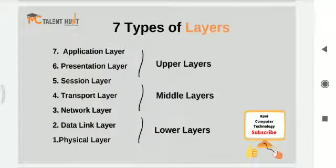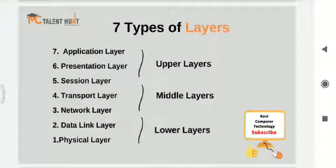Starting from application layer, presentation layer, session layer, transport layer, network layer, data link layer, and physical layer. The application layer is the top layer and the physical layer is the first layer — layers one through seven. Application and presentation layers act as upper layers; session, transport, and network layers act as middle layers; and data link layer and physical layer act as lower layers.